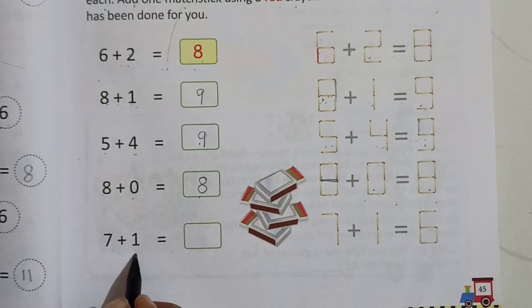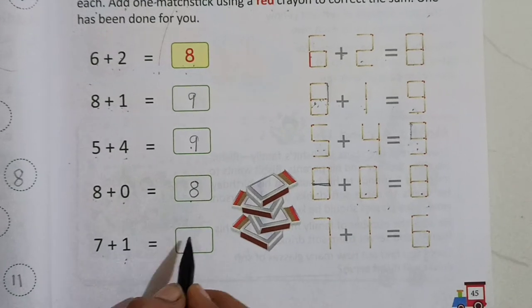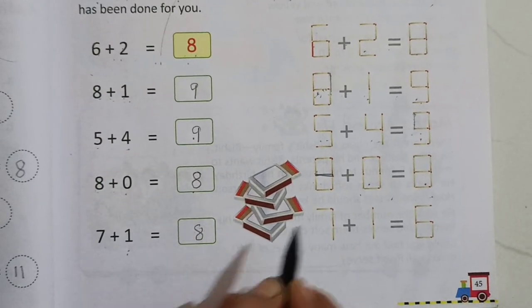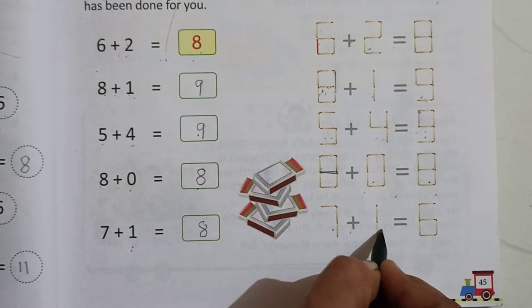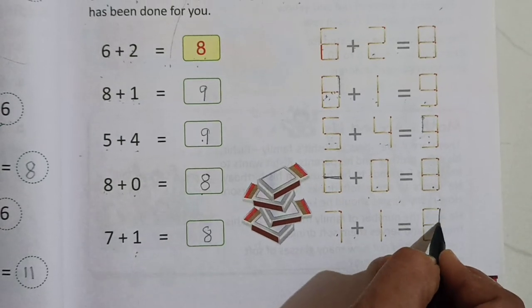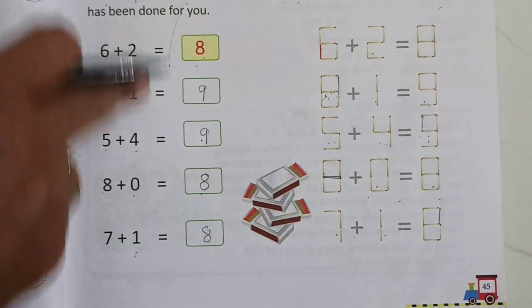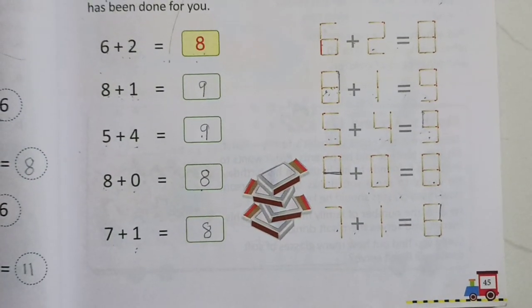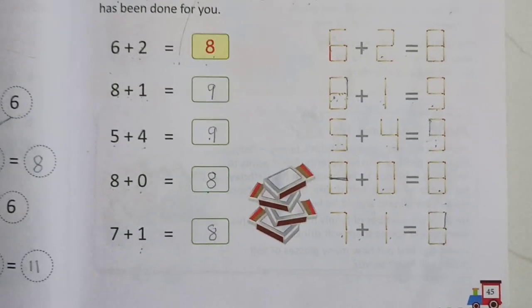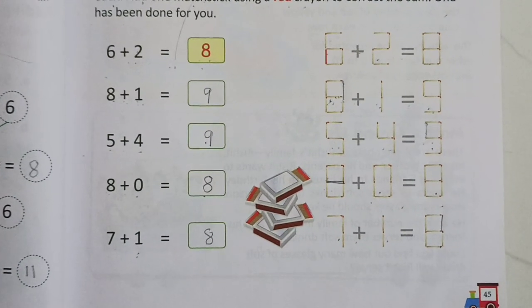Then 7 plus 1. After 7, 1 means 8. So look here, 7 plus 1. So we have to make here one line. It becomes 8. Like this children, you have to complete this page. Thank you.